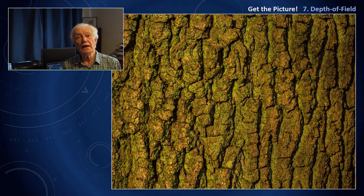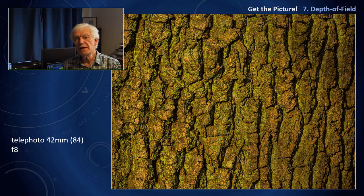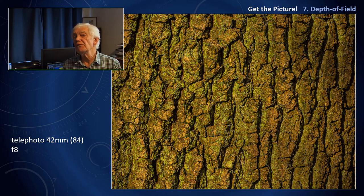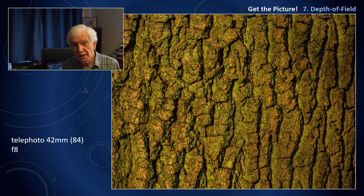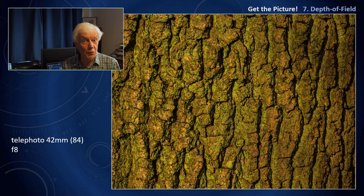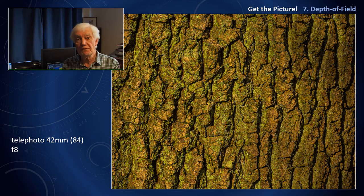When photographing close-ups like the bark of this tree, if everything is on the same plane, then depth of field is hardly going to matter. It's not like the bloom of, say, a rhododendron where you've got depth. Here, everything is more or less the same distance away, so once you photograph any part of the bark, everything is going to be sharp.